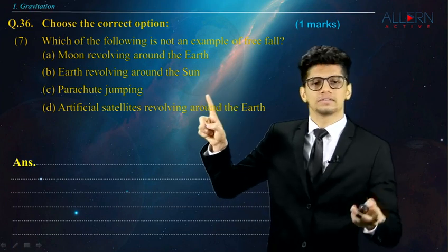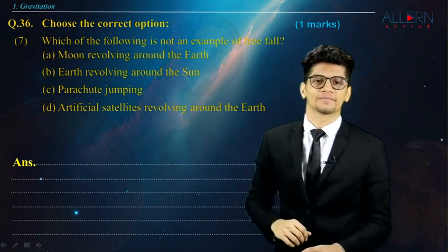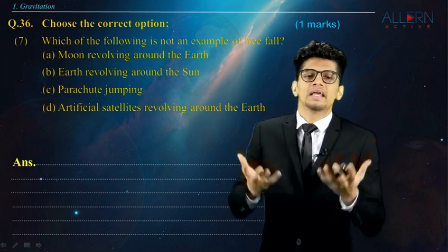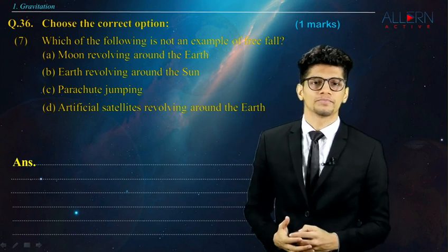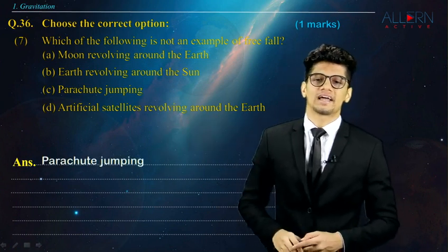Earth revolving around the sun takes place in vacuum. This is a free fall. Parachute jumping. Whenever somebody jumps in a parachute, we know that because of the air resistance, it comes down slowly. That means this is not an example of a free fall. That means this answer is the correct answer.